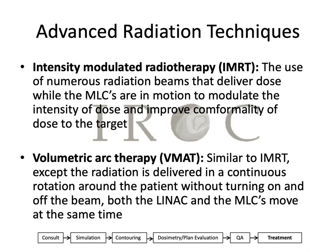There are many different radiation techniques to know. Intensity modulated radiation therapy, or IMRT, is the use of numerous radiation beams that deliver dose while the MLCs are moving in order to modulate the intensity of dose and improve conformality to the target — it relies a lot on the computer system as well as the dosimetrist. Volumetric arc therapy is very similar to IMRT, except the radiation is delivered in a continuous rotation around the patient without turning on and off the beam — some people call it static IMRT versus arc therapy. With arc therapy, both the LINAC and the MLCs are moving at the same time, and the benefit is that the treatment can often be delivered much quicker.